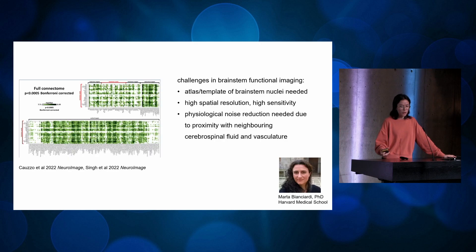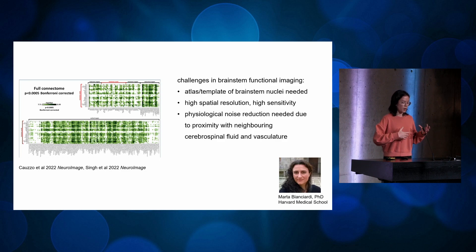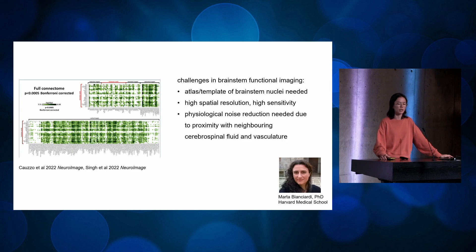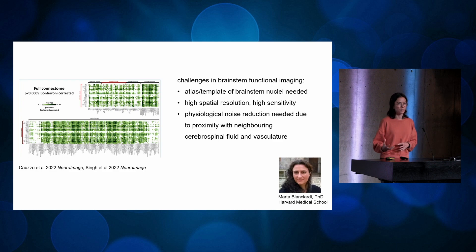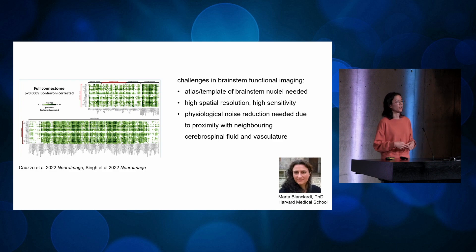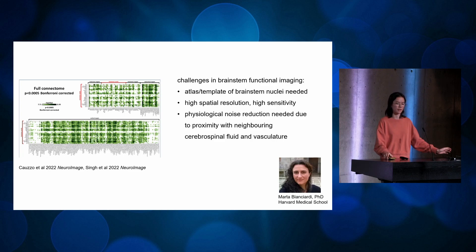Over many years she delineated more and more nuclei, and now there's a total of 58 brainstem nuclei. Very recently, just last year, she put out the first functional connectivity atlas between the whole brainstem and the whole cortex — so it's no longer just one specific nucleus; it is really quite comprehensive.